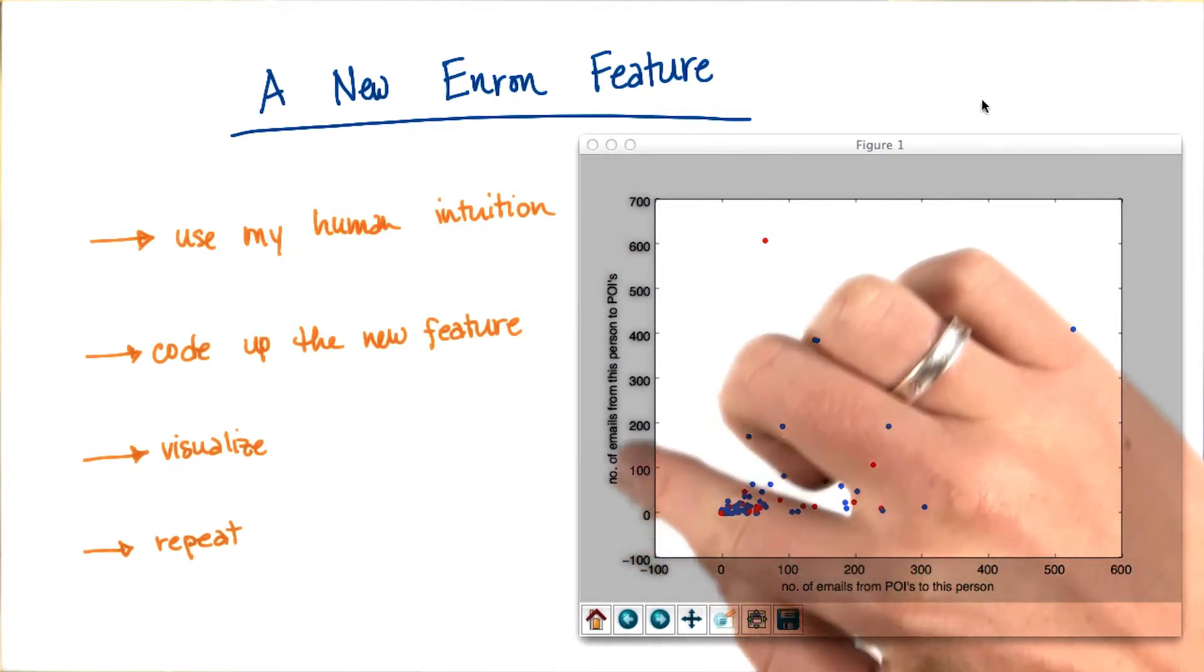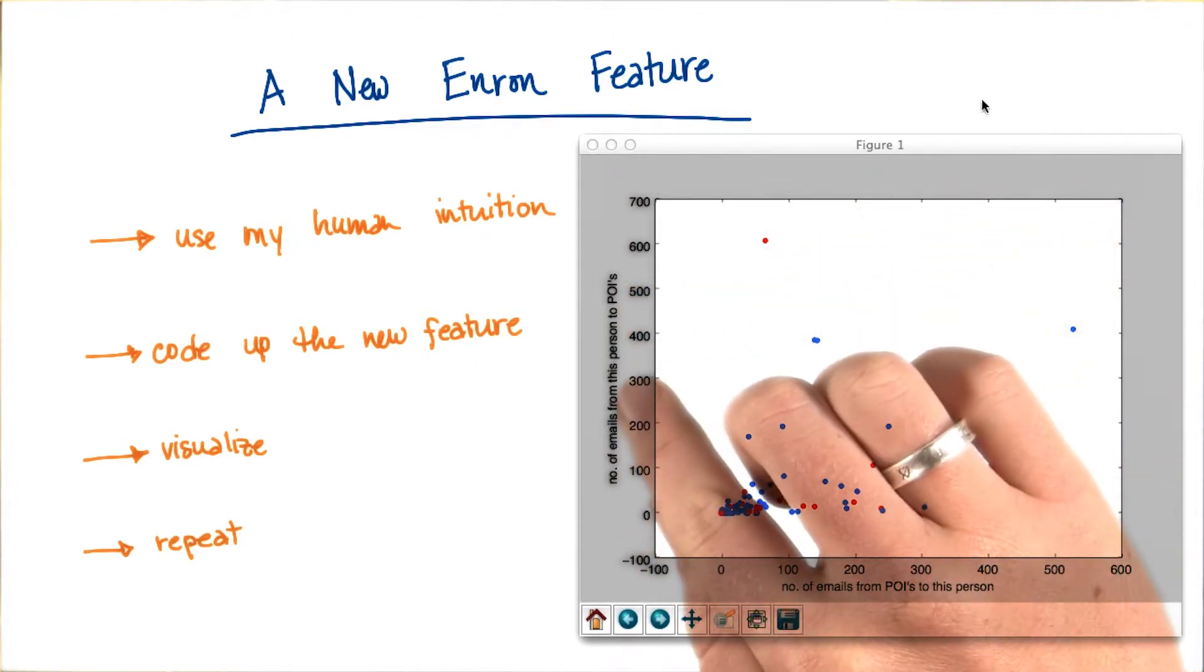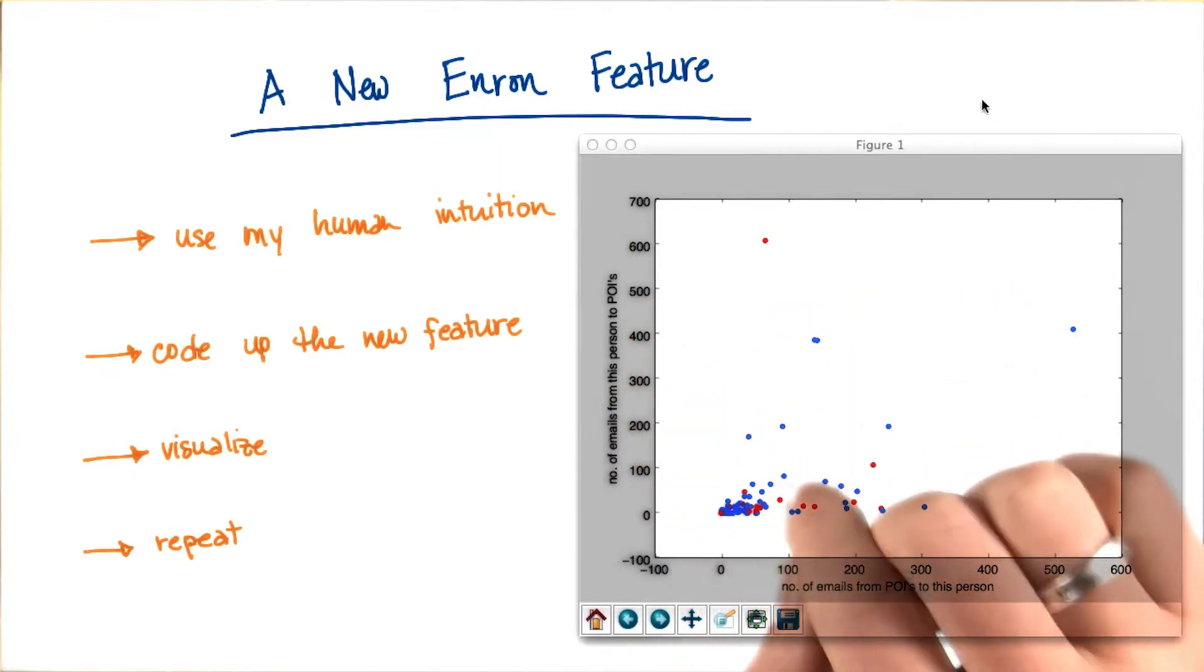Along the y-axis, I have something else that I think might give me some discrimination as well, which is the number of emails that this person sends to persons of interest.